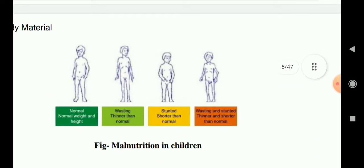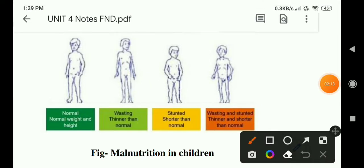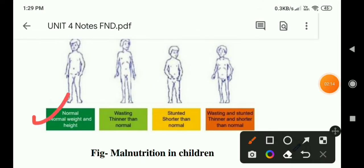This figure describes all four cases studied: a normal child, a wasted person, a stunted person, and a child who is both wasted and stunted.